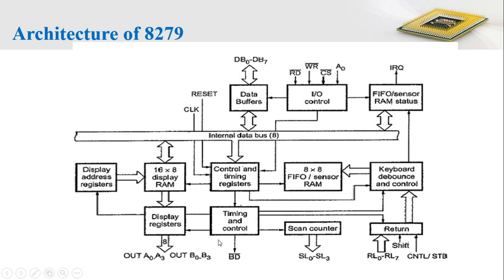Next is the control and timing registers and timing and control unit. This timing and control unit is used for controlling the timing of operations and controlling various activities. Various registers associated with this timing and control unit store information regarding the modes of operation of the keyboard and display unit, including other programmed modes of operation.